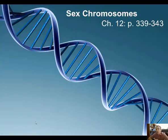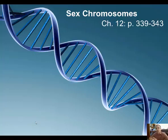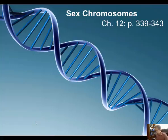Hi everyone. This is lecture 22 on sex chromosomes. The material here is found in chapter 12. Up until this point, the last week we've talked about mitosis and meiosis. We've talked about chromosomes and how they divide during those two phases. But we've talked about the chromosomes as autosomes — the non-sex chromosomes. Sex chromosomes present a special case because in some members of the species they are not the same; they are not homologous. So there are special considerations that lead to differences in how traits are inherited.